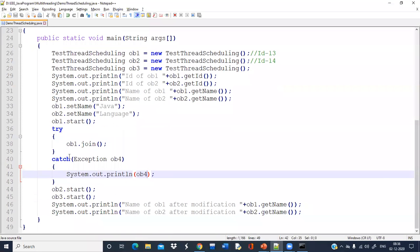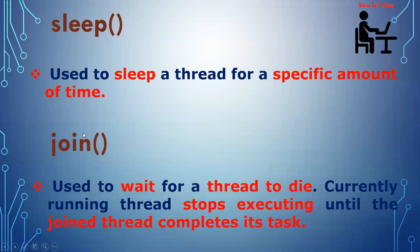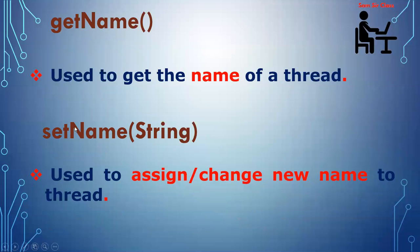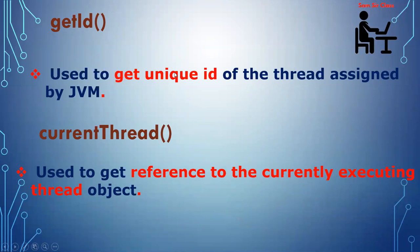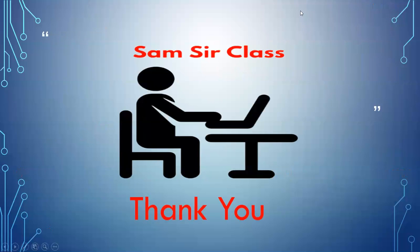So this is the complete example regarding thread scheduling. The join method is used to wait for a thread to die — till it is not completed, the currently running thread stops executing until the joined thread completes its task. getName() is used to get the name of a thread, setName() is used to assign or change the name of a thread. getId() gets the unique ID of the thread which is assigned by the JVM and cannot be changed. And currentThread() is used to get a reference to the currently executing thread, so you can retrieve the ID of whichever thread is running at that moment.